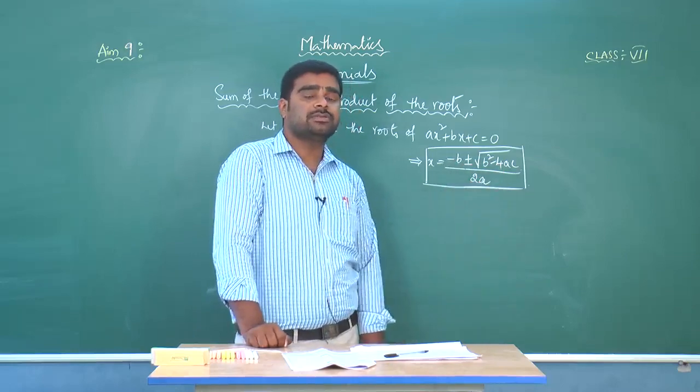Without finding the roots, we can find the sum and product of the roots directly. Comparing coefficients with the standard form, we get A equals 1, B equals 7, and C equals 1. Let the roots be alpha and beta. Then alpha plus beta equals minus B by A, which is minus 7 by 1, which equals minus 7. And alpha into beta equals C by A, which is 1 by 1, that equals 1.